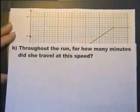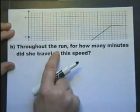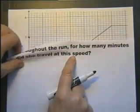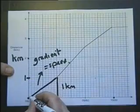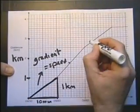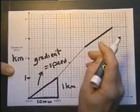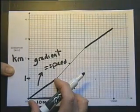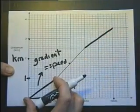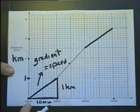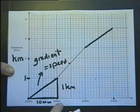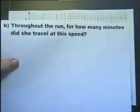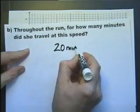Part B continues the question: Throughout the run, for how many minutes did she travel at this speed? Looking at the graph, that part and that part are exactly the same gradient. She's traveling at the same speed between 9:30 and 9:40 and between 9:50 and 10 o'clock—10 minutes and 10 minutes, a total of 20 minutes.